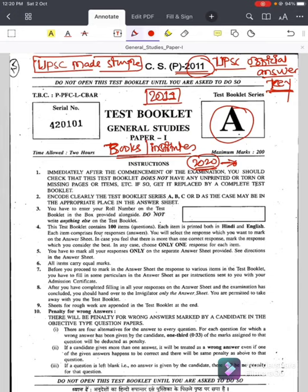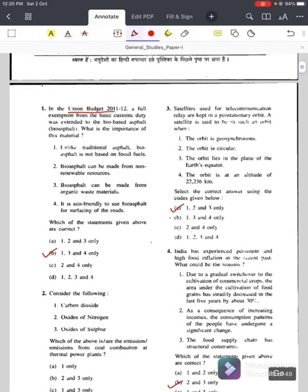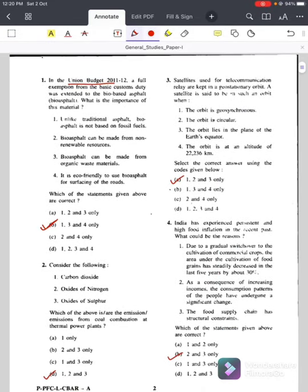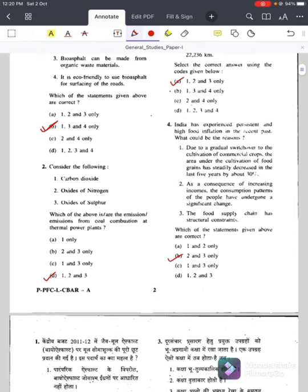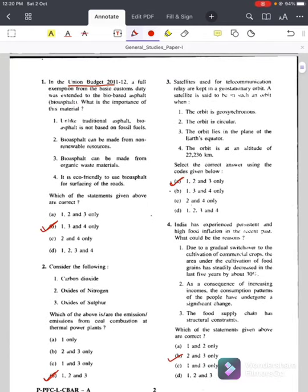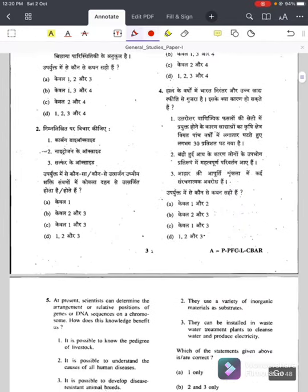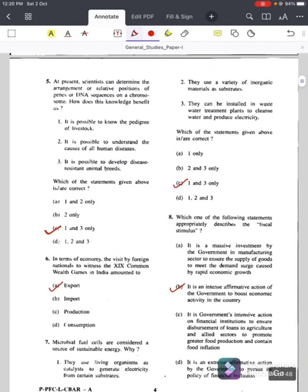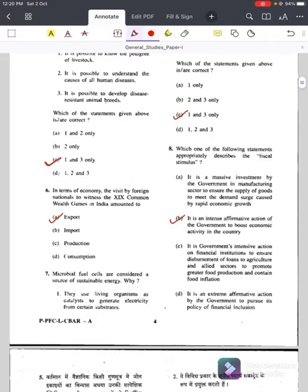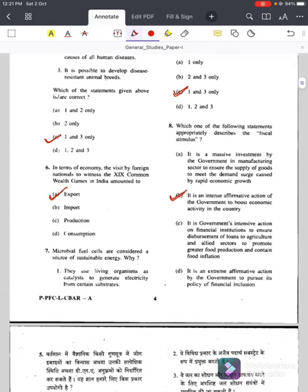This is 2011 question paper. We'll start with Set A. Question number one with respect to Union Budget 2011-12, answer is B. Then with respect to this pollution related question, answer is D. Third answer is A, fourth answer is B, fifth answer is C, sixth answer is A, seventh answer is C, eighth question answer is B.